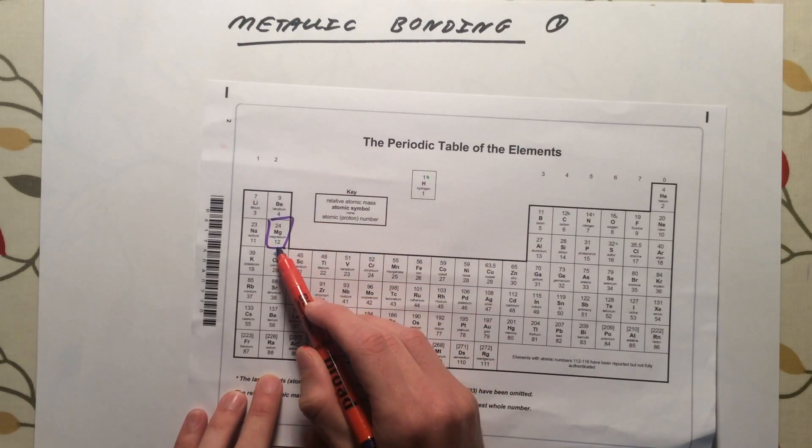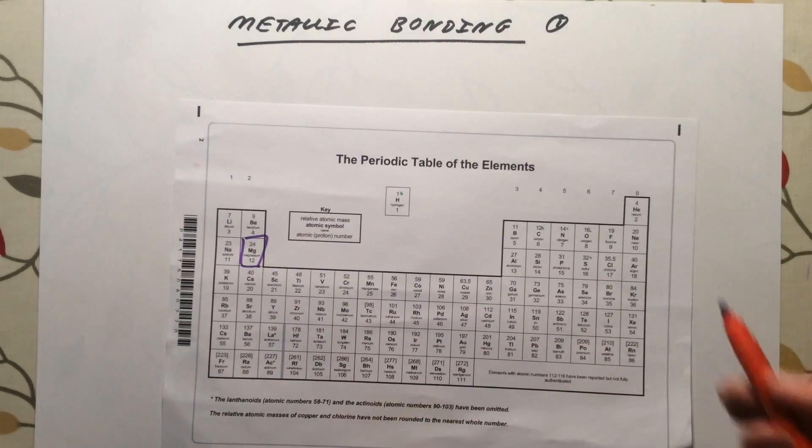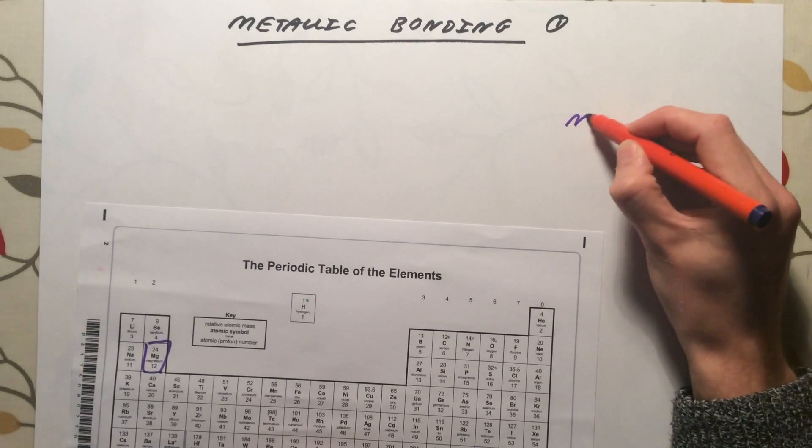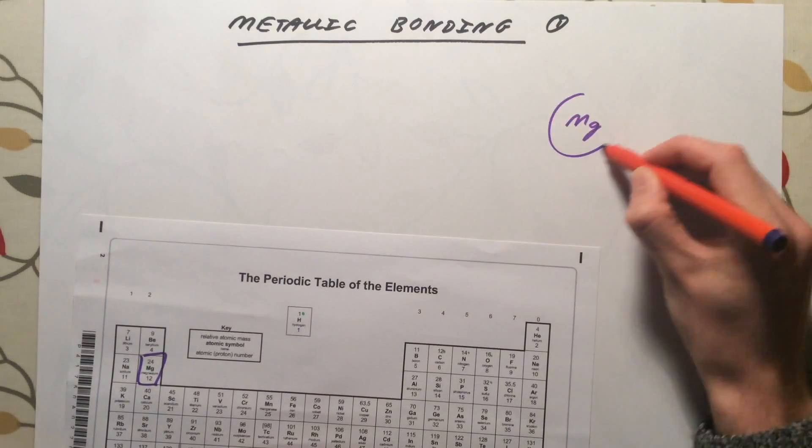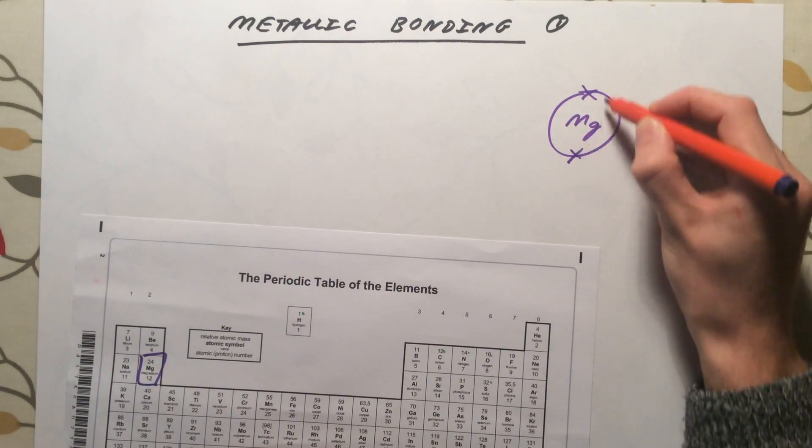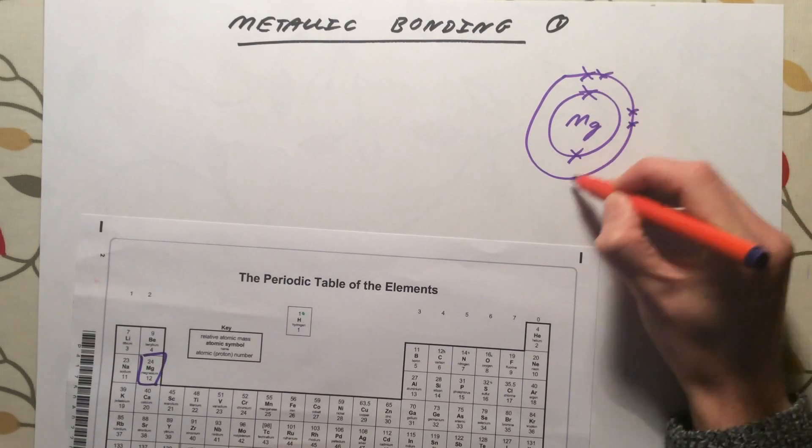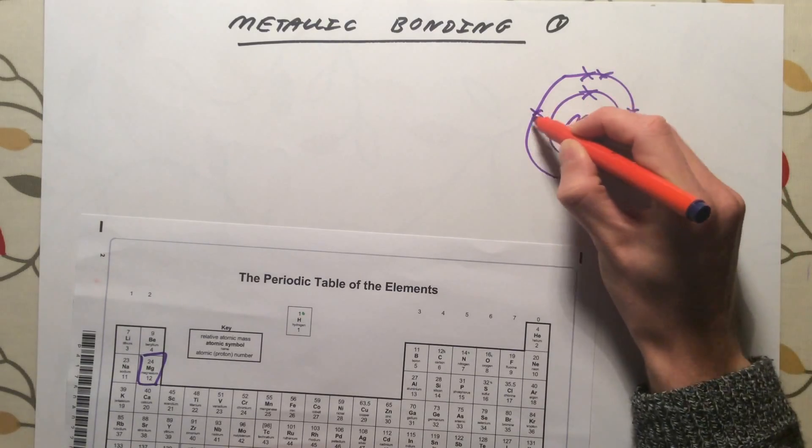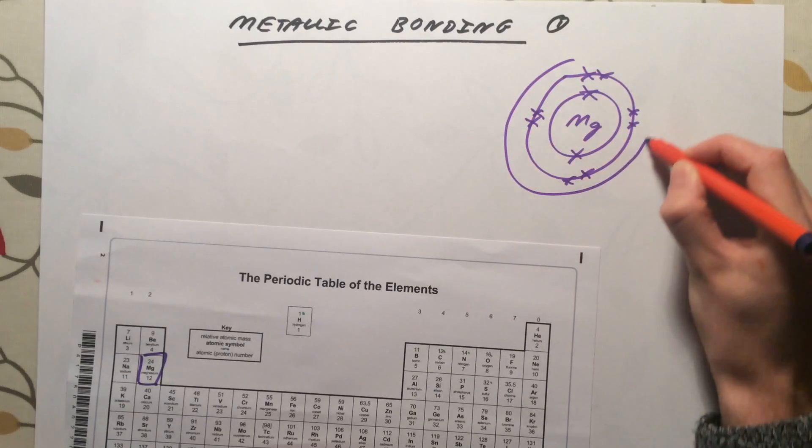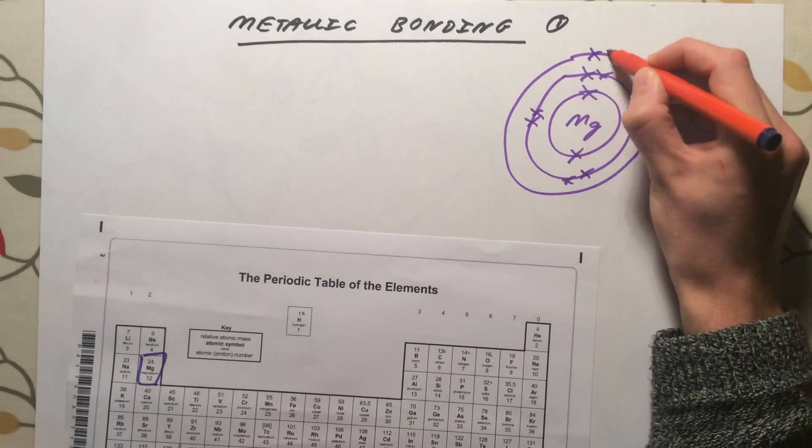Magnesium has an atomic or proton number of 12, so it has 12 electrons. Those electrons are arranged in shells about the nucleus. In the first shell, we have two electrons. In the second shell, we have eight electrons. And in magnesium's outer shell, we have the final two electrons, giving us a total of 12 electrons.